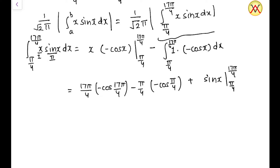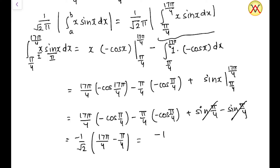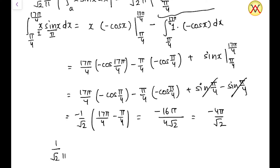Since 17π/4 = 4π + π/4, we have cos(17π/4) = cos(π/4). The terms −(17π/4)cos(π/4) and sin terms involving sin(π/4) cancel: +sin(π/4) − sin(π/4) = 0. We get −(1/√2)(17π/4 − π/4) = −(1/√2)(16π/4) = −4π/√2. Substituting into the expression: (1/√(2π)) × |−4π/√2| = (1/√(2π)) × (4π/√2) = √2. So the correct answer is √2.